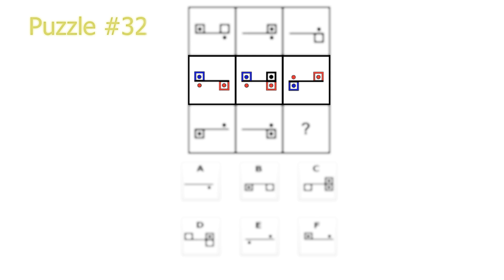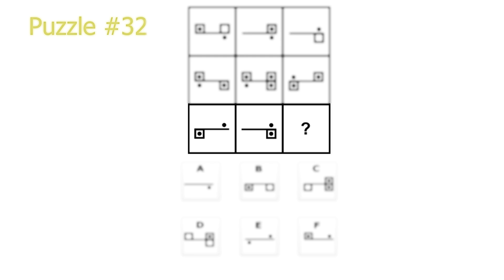Now we can move on to solving the puzzle. Let's look at the third row. We have nothing in common between the two first pictures on the bottom side, and on the top side we have a dot on the top right in common. So if we just flip this dot over to the bottom right then we get our answer picture. Our answer will just be a line with a dot on the bottom right. A is the correct solution.